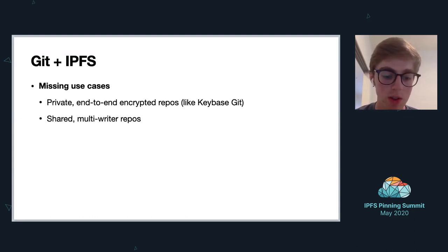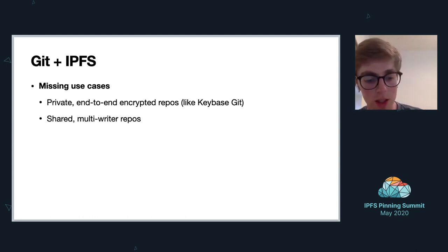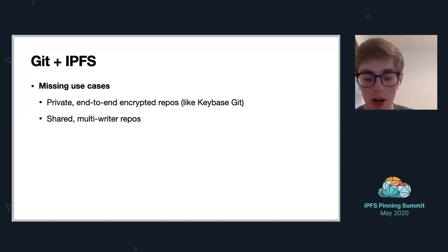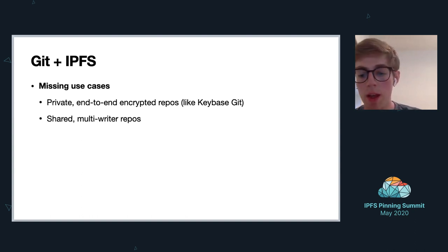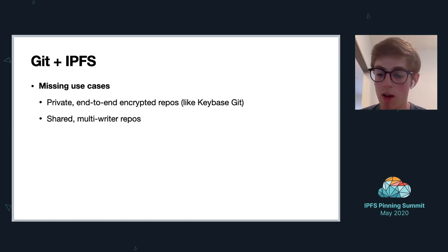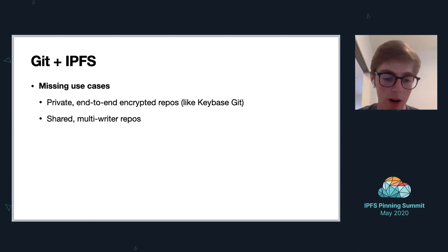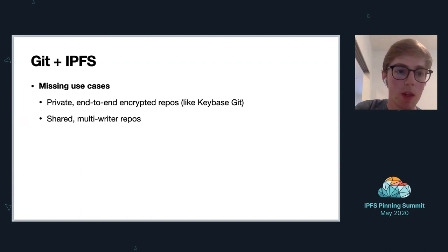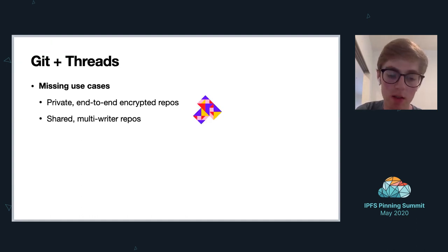A lot of the tools out there to help you store Git repos on IPFS were built using IPLD, where they give you a CID back. A lot of them use IPNS to track the latest CID for a Git repo. But there are problems with larger repos that multiple people are writing to and that need more fine-grained access control. I've also been following Textile very closely, and I saw Threads as a really good fit for these two use cases.